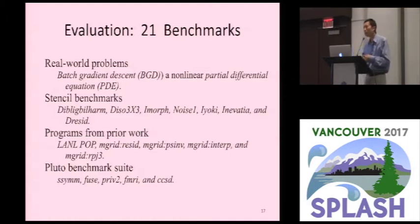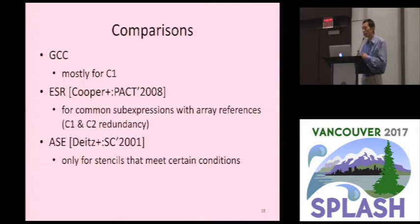For evaluation, we used 21 benchmarks. These benchmarks come from some real-world problems and also some publicly available benchmark suites, and also from some previous studies. And for comparison, we used the GCC compiler. GCC compiler mostly is only effective for the category 1 redundancy elimination. And then there are two research papers. The ESR paper, ESR technique was from back to 2008. It is a way to find common sub-expressions with array references. And it only applies for category 1 and category 2 redundancies. ASE is another earlier work. It applies to only stencil, regular stencil computations that meet certain conditions.